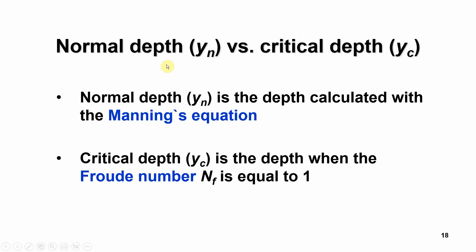Related to Manning's equation is the normal depth, defined as y_n, which applies to uniform flow. We've also talked about the Froude number — when the Froude number equals one, we define that as the critical depth. So the normal depth is the depth calculated with the Manning's equation, and the critical depth is the depth when the Froude number equals one.